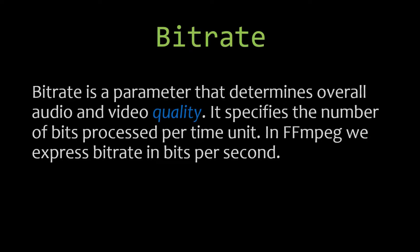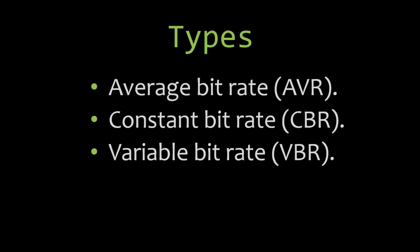There are mainly three types of bitrates: average bitrate, constant bitrate, and variable bitrate. Average bitrate is the number of bits processed per second and is also used in encoding VBR. Constant bitrate refers to a number of bits processed per second that remains constant — it doesn't fluctuate with the complexity or speed of the scene, so the bitrate throughout the video remains constant.